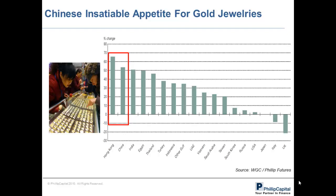Apart from India, China is the second largest consumer in gold jewelry demand based on figures from the World Gold Council in 2012. This chart illustrates the yearly percentage change where Hong Kong and China recorded the largest percentage increase in their demand for jewelry. Strong buying volume is usually recorded before key major festivals, especially the Lunar New Year, as gold jewelries are given as gifts for friends or relatives. We reckon this buying pace will continue as current low prices are attractive enough to encourage more buying interest.